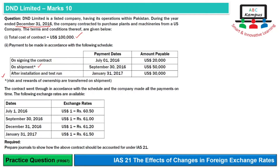The contract went through in accordance with the schedule, yani joh payment schedule upar bataya wa hai, uske mutabiq ki payment ho hi hai. And the company made all the payments on time. The following exchange rates are available - in teen dates ka rate bhi hai aur iske alawa year-end ka rate bhi maujood hai. Requirement yeh hai ki prepare journals to show how the above contract should be accounted for under IAS 21. To yeh hamaari requirement hai.